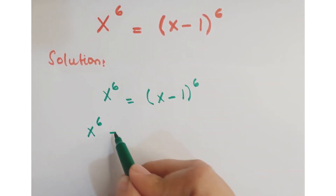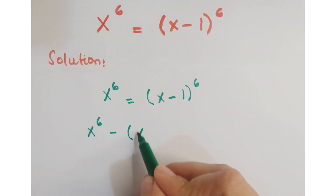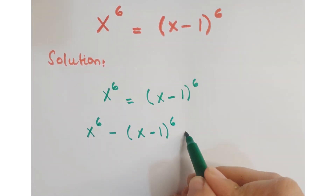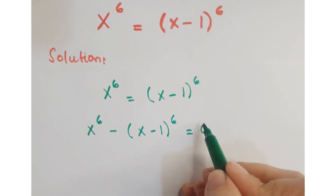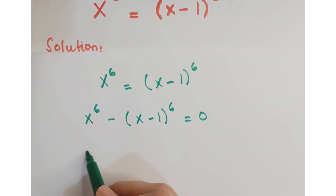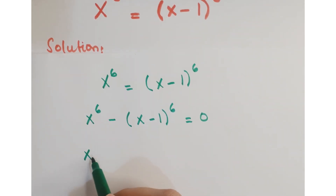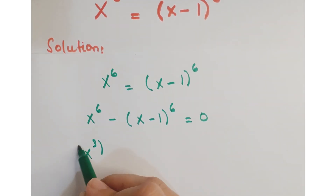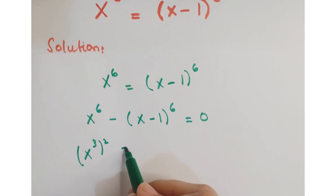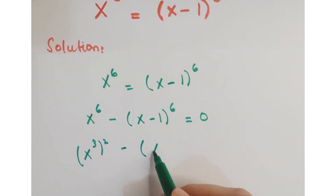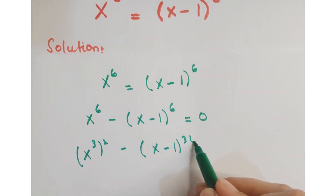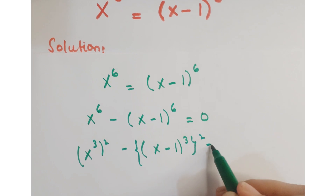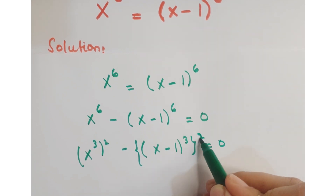First of all, move this value on the left hand side so its sign gets changed. Further, you can write this as x cube whole squared minus x minus 1 whole cube squared equals 0.